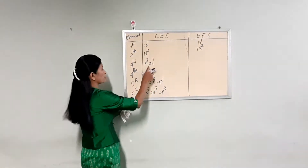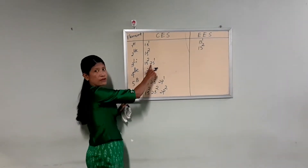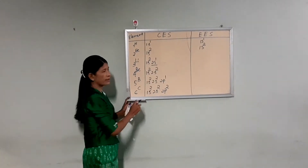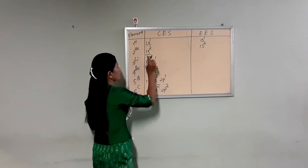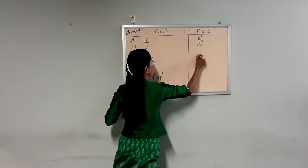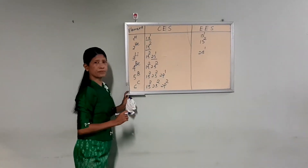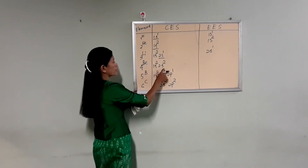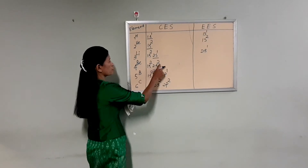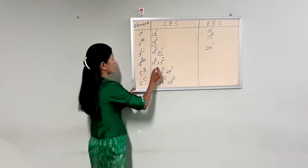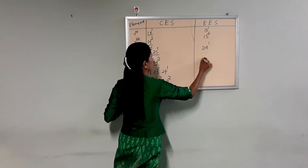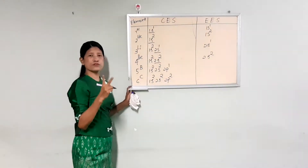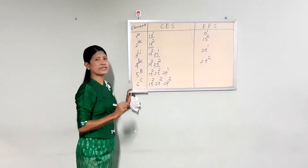Now, we have two notations. Two is one, four is one, one is two, two is two. That's essential electronics. The electronic structure notation continues: one is two is two, two is two. The condensed electronic structure is one.